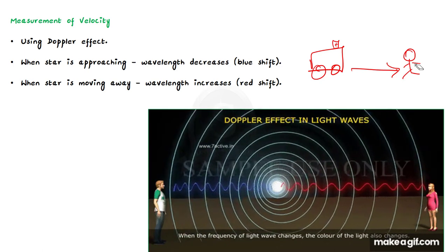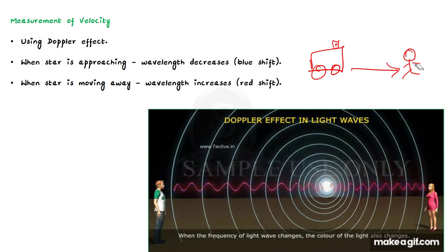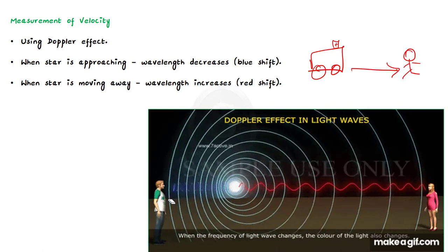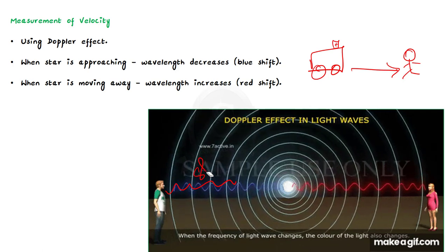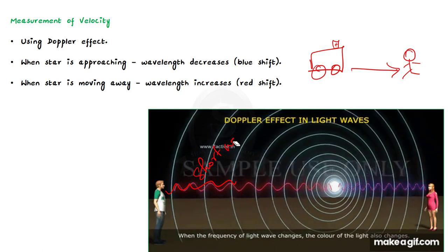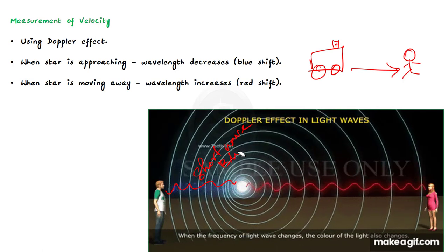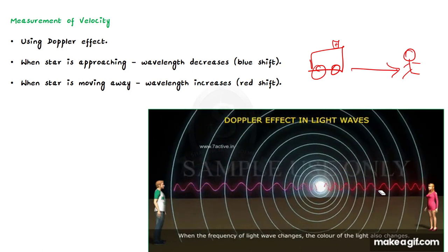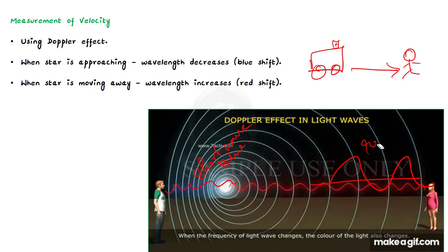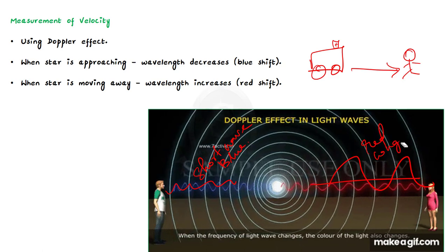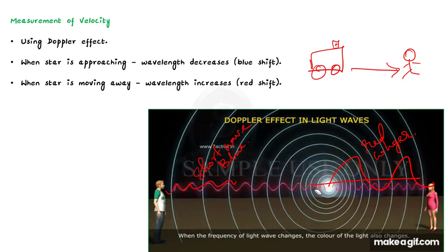Similarly, if a star is moving towards us, its light waves get scrunched up to shorter or bluer wavelengths, producing a blue shift. If a star is moving away, its light waves get stretched out to longer, redder wavelengths, producing a redshift. The faster the star, the greater this shift.